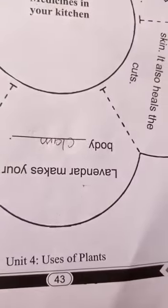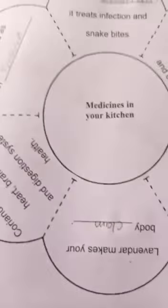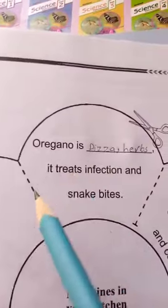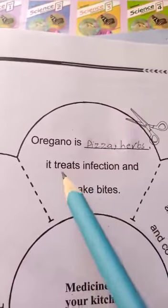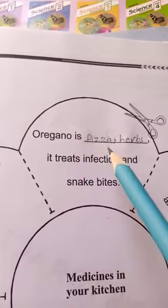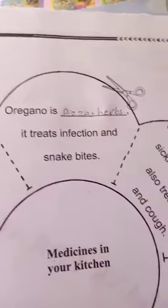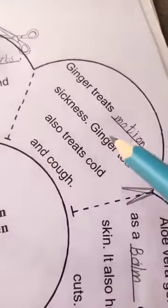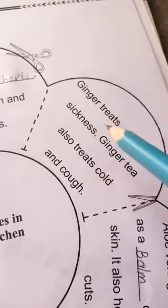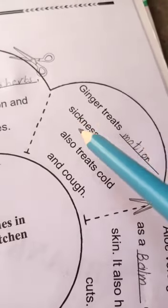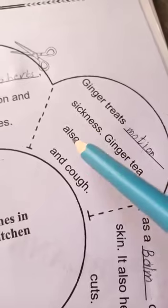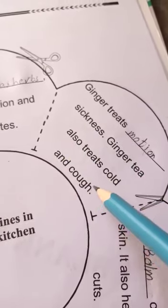This is page number 43. Filling in the blanks: the first one — oregano is a herb. It treats infection and snake bite. Oregano is also known as the pizza herb. Ginger treats motion sickness and is also used for cold and cough.